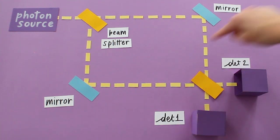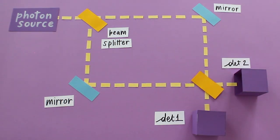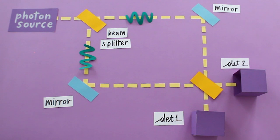In the delayed-choice version of the experiment, the photon enters the interferometer with the beam splitter in, but then, while the photon is still propagating along both paths, the beam splitter is removed.